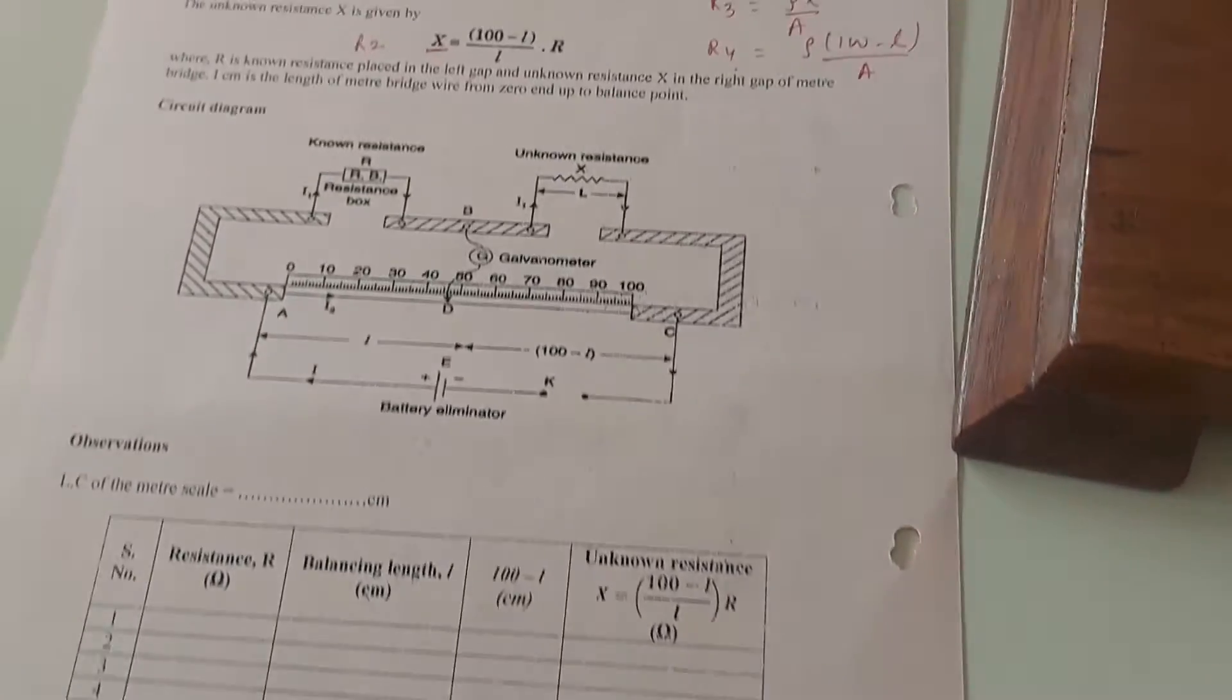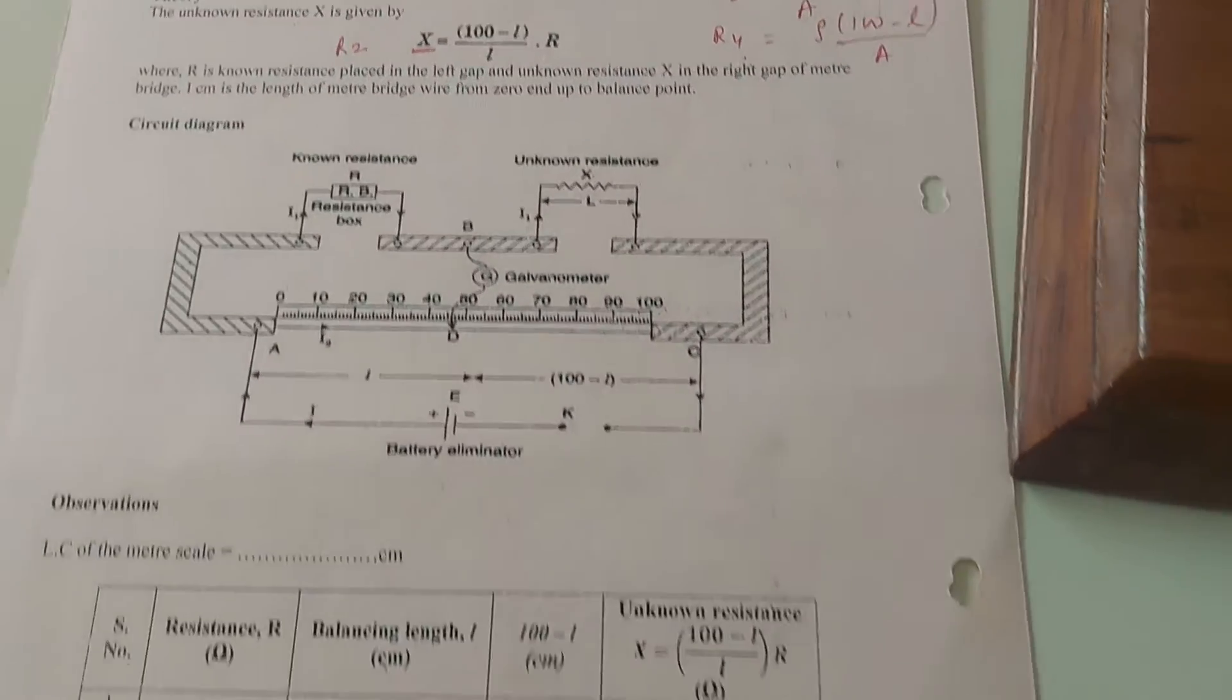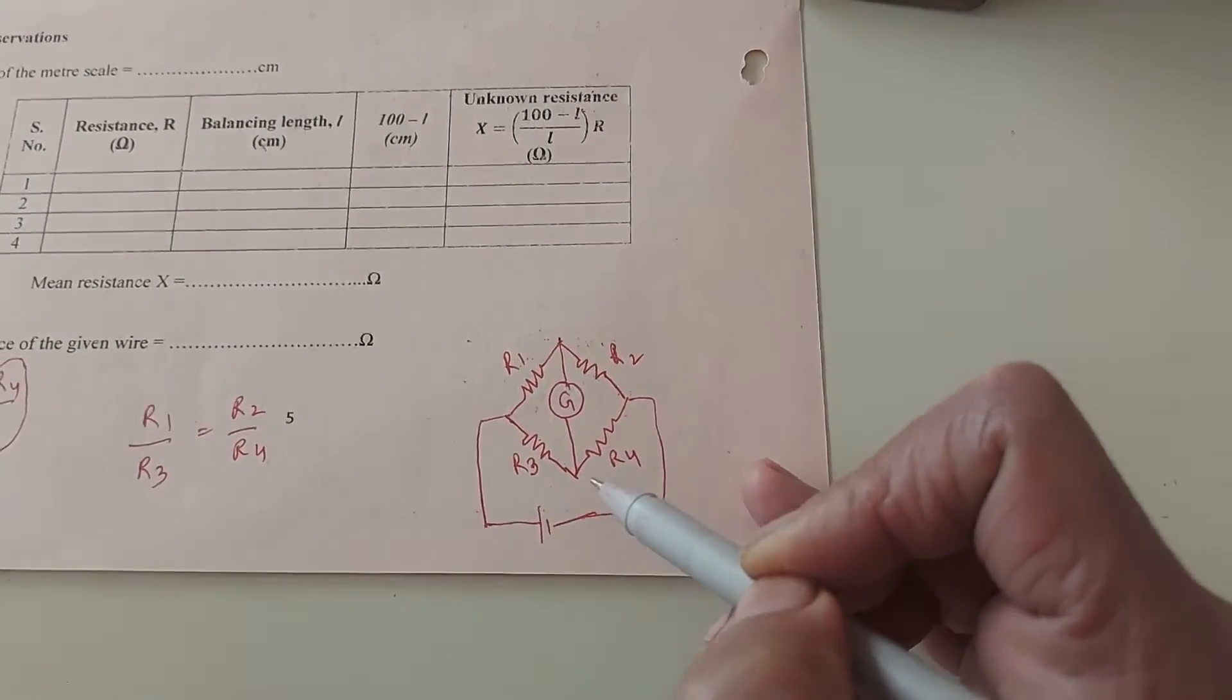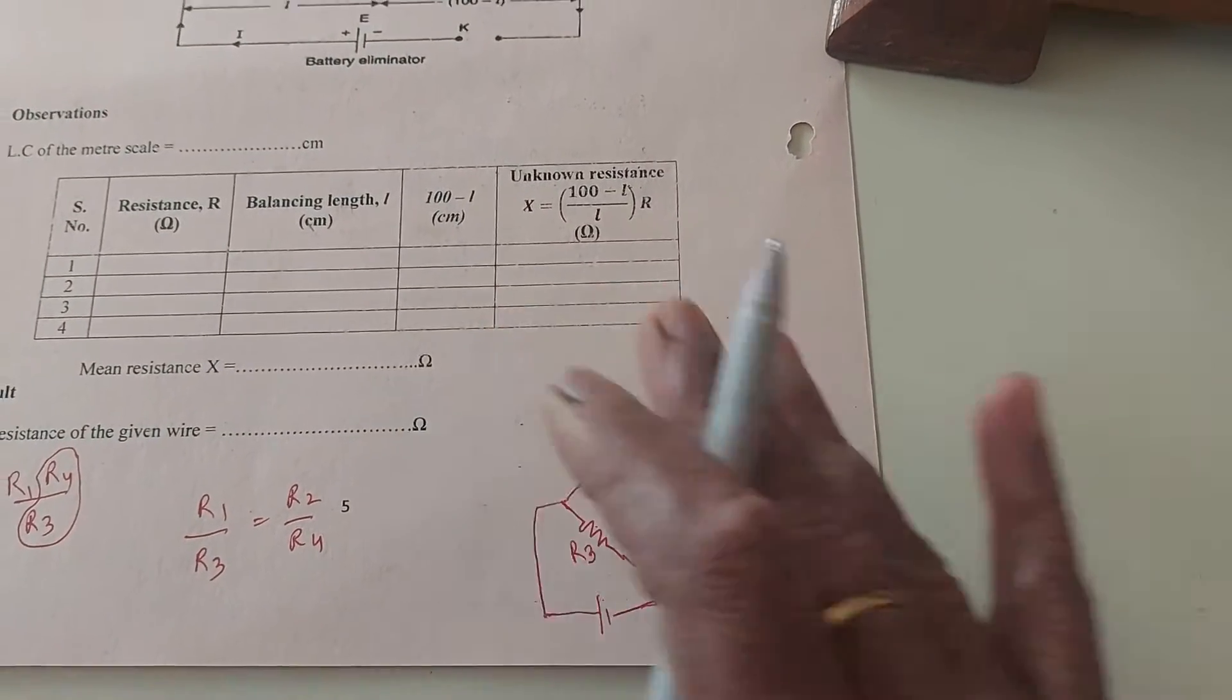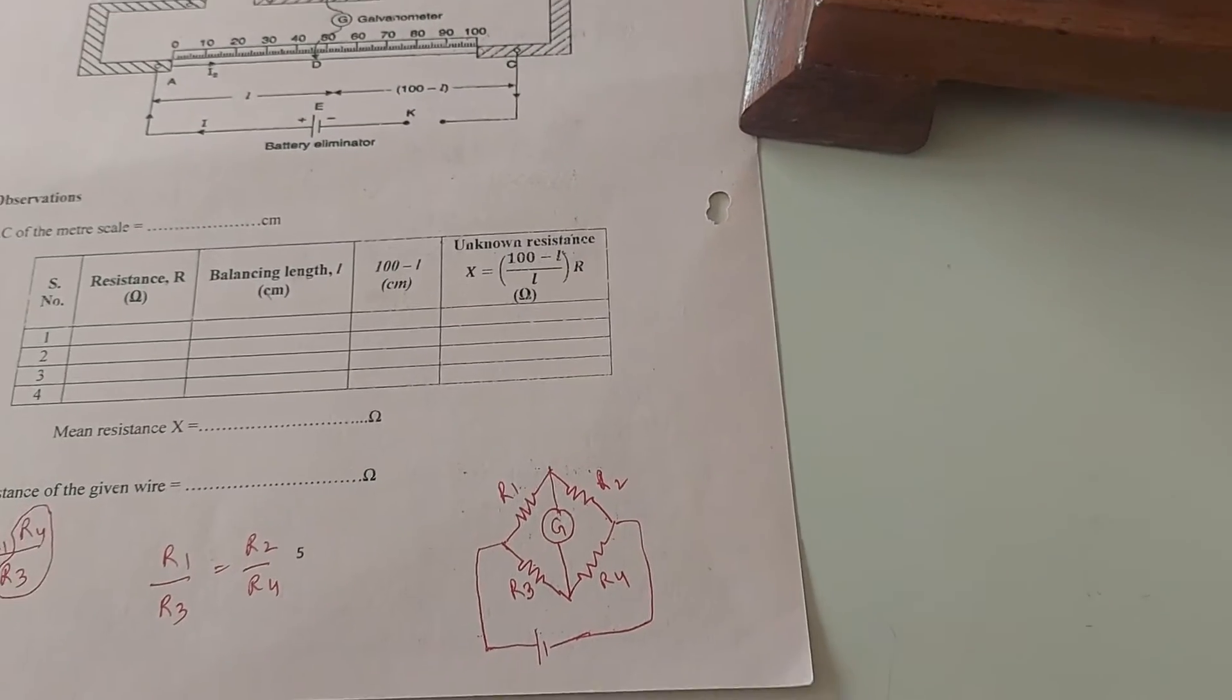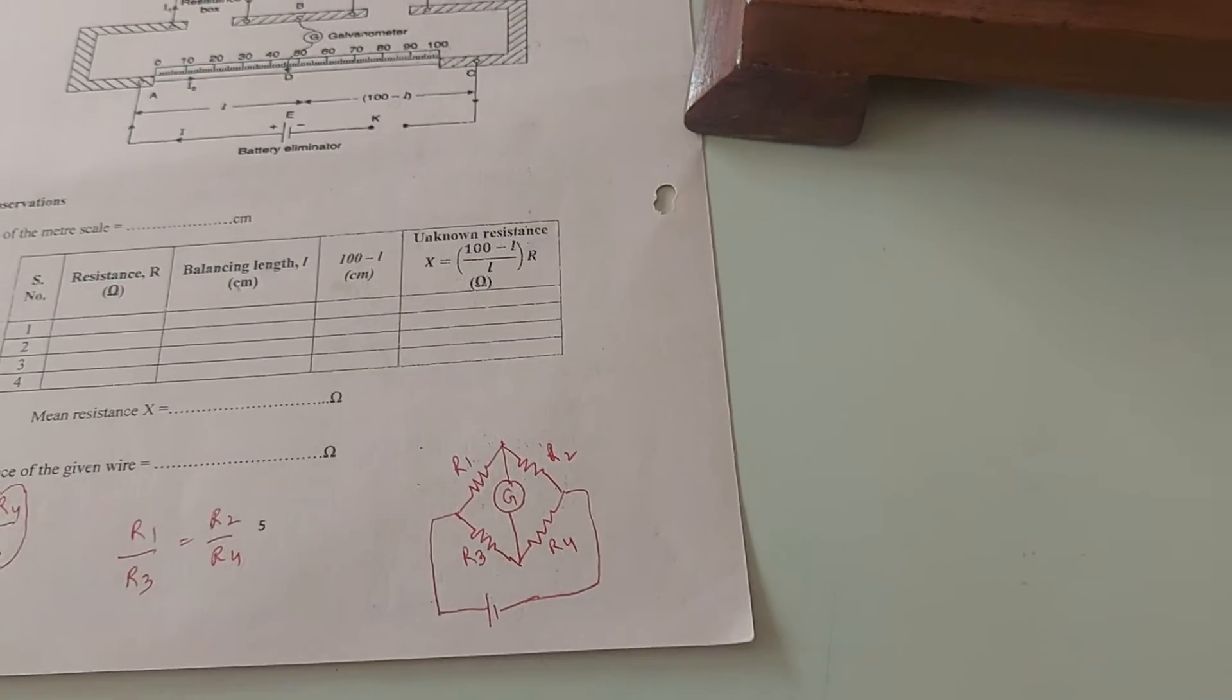Between we have the galvanometer, and the other two ends connected to the battery. This completes our circuit diagram, and it is exactly in conformance with the Wheatstone bridge.